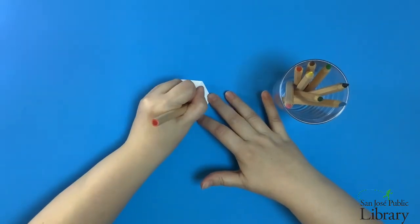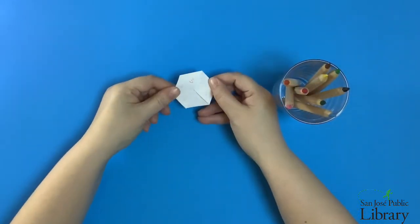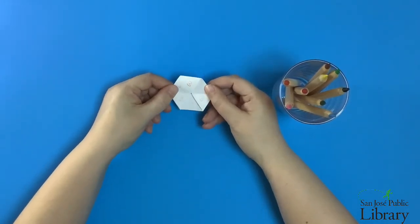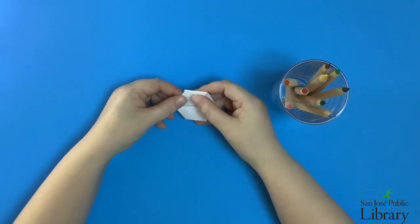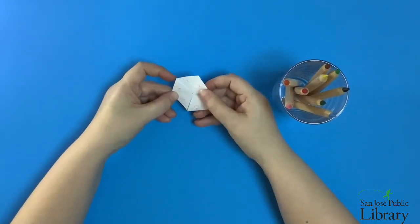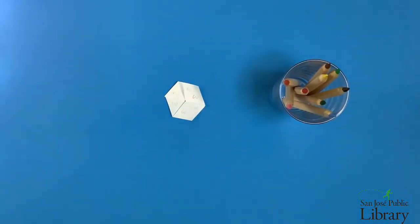So how did we get three sides on our hexaflexagon? Well if we think back to our Mobius strip it works kind of the same way. Our Mobius strip we put in one half turn in order to get one side. Here with our hexaflexagon we put in three half turns and got three sides.